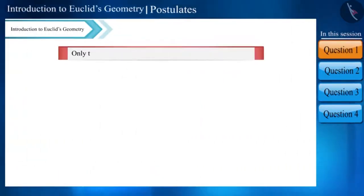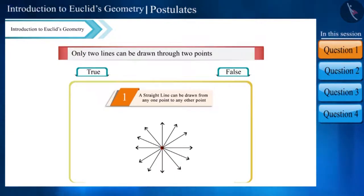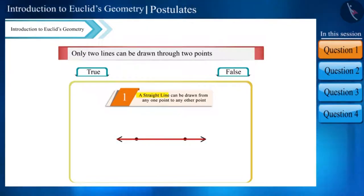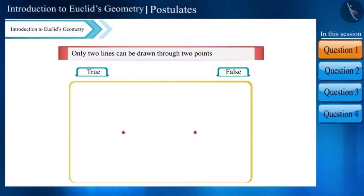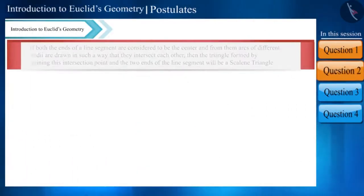Only two lines can be drawn through two points. Friends, is this statement true? In the previous video, we saw that infinite lines can be drawn through one point and only one line can be drawn through two points. But infinite curves can be drawn through two points which are not straight lines. Therefore, this statement is false.